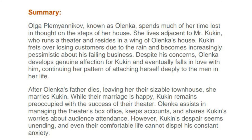Olga Plemyanikova, known as Olenka, spends much of her time lost in thought on the steps of her house. She lives adjacent to Mr. Kukin, who runs a theatre and resides in a wing of her house. Kukin frets over losing customers due to rain and becomes increasingly pessimistic about his failing business. Despite his concerns, Olenka develops genuine affection for Kukin and eventually falls in love with him. After Olenka's father dies, leaving her a sizeable townhouse, she marries Kukin. While their marriage is happy, Kukin remains preoccupied with the theatre's success. Olenka assists in managing the box office, keeps accounts, and shares Kukin's worries about audience attendance. However, Kukin's despair seems unending, and even their comfortable life cannot dispel his constant anxiety.